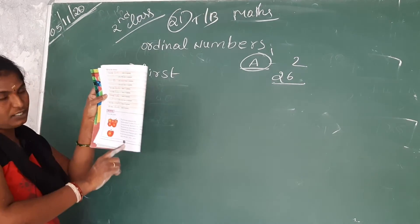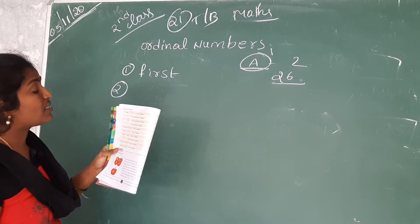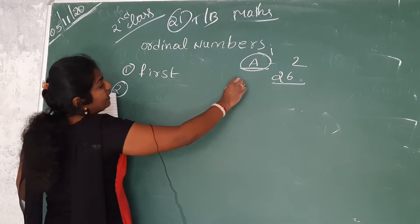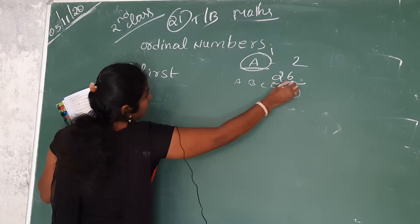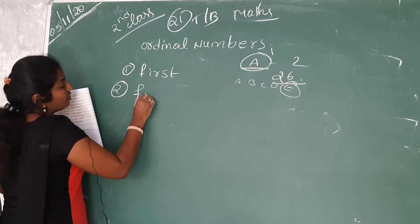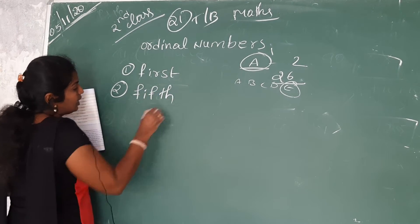Second answer. Fill in the blanks page number 22 fill in the blanks. Dash is the fifth letter. So A B C D E, E is the letter. Fifth letter F I F T H fifth.